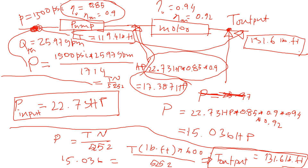The torque converter in an automatic transmission multiplies torque — it can multiply from about 1.1 or 1.2 all the way up to 3 times. So in theory, an automatic car equipped with the same engine as a manual car should feel faster at the beginning because it multiplies torque. Look at the power equation to understand how: power is constant — whatever is available from the engine or prime mover.